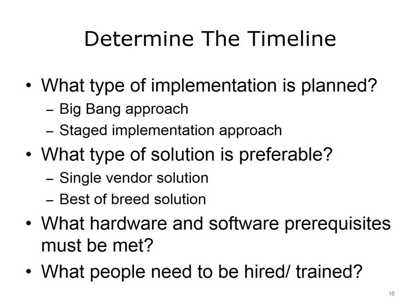Each type of implementation has advantages and disadvantages. The Big Bang approach usually has a shorter implementation time but a higher risk of failure. The Staged implementation allows clinicians to gradually acclimatize to the EHR and is more amenable to physicians who are resistant to change. Staged implementations are associated with lower initial productivity losses but higher total implementation costs compared with the Big Bang approach. The culture of the organization, as well as considerations of cost and availability of essential personnel, may influence the type of implementation selected.